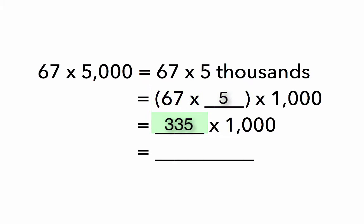Let's continue with our equation. 335 times 1,000 is 335,000.